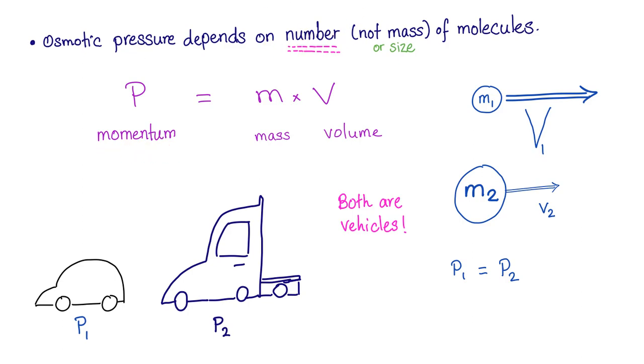Remember, in physics, there is something called momentum. It's equal to mass times velocity. So, if you have a small car, M1 is small, but V1 is huge. If you have a semi-truck, M2 is huge, V2 is relatively small. So, momentum P1 for the car equals P2 for the semi-truck. That's what we care about. We care about the number. Both of them are vehicles. So, we care about the number. So, if glucose is telling you, I'm a bigger molecule than sodium, I should be more osmotically active. Tell him to shut up. We only care about numbers. And sodium is all over the place. It's the major ion.